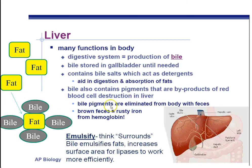This bile is actually a byproduct of the red blood cells that are broken down in your liver, and the bile makes its way into your feces eventually. There's iron in the red blood cells as well. That iron in the hemoglobin within the red blood cells is what makes brown feces brown.